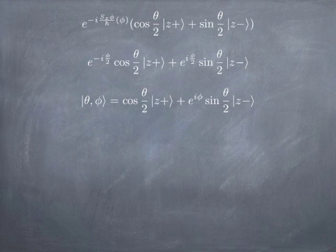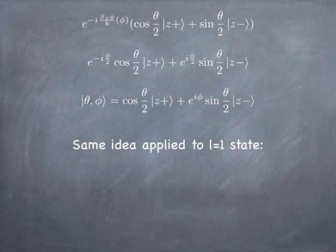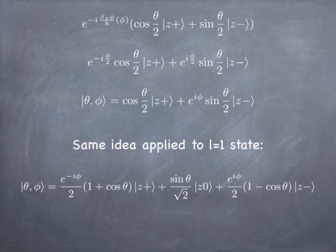You can apply this exact same idea to the L equals 1 states we talked about last time and get a similar result. This is the expression you deduce if you did the same rotation with the three components of L=1 spin pointing in any direction in space. As a check, if you set phi equal to 0 and theta equal to pi/2, the cosines go to 0, the sine goes to 1, and you get one-half z-plus plus 1/sqrt(2) z-zero plus one-half z-minus — which is exactly the way we built the state with angular momentum 1 about the x-axis. You can build any other state exactly the same way. All right, have a good one.